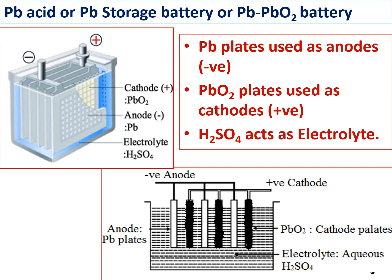Not just one plate — a number of lead plates act as anodes. The anode is the negative terminal in an electrochemical cell. Lead oxide (PbO₂) acts as the cathode, giving the positive terminal in the electrochemical cell. Diluted H₂SO₄ acts as the electrolyte. So: lead acts as anode, lead oxide acts as cathode, and H₂SO₄ acts as electrolyte.